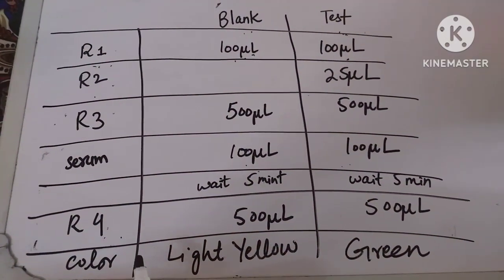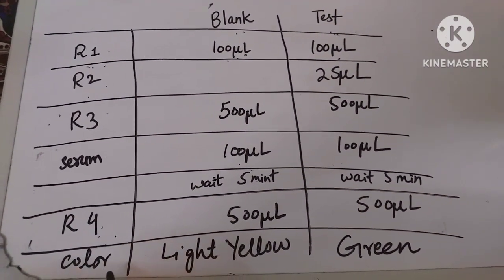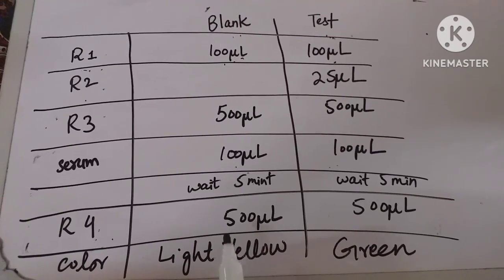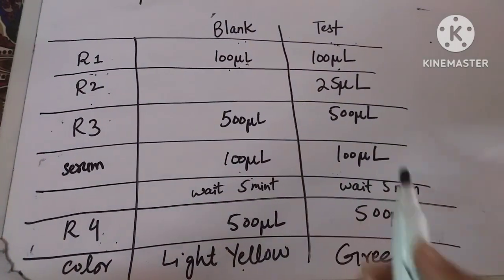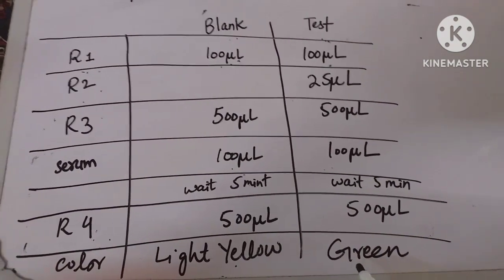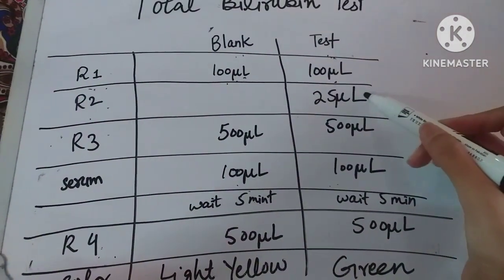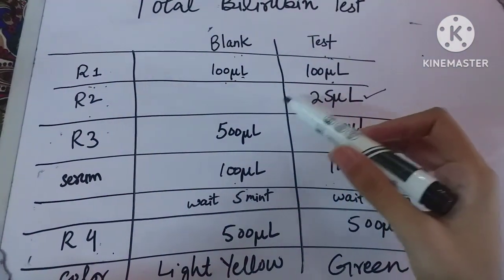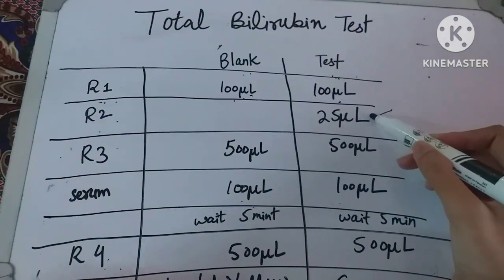After adding R4, the final color appears: the blank test tube color will appear light yellow, and the test tube color will appear green — the one in which we added R2. So the only difference between the blank and test tube is the R2 reagent.